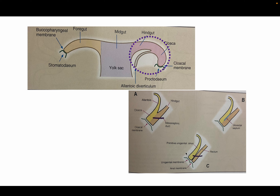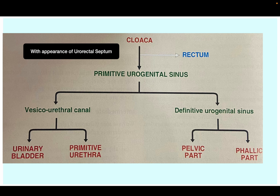With the appearance of the urorectal septum, the cloaca is divided into the primitive urogenital sinus and the rectum. Simultaneously, the cloacal membrane also divides into the urogenital membrane in relation to the primitive urogenital sinus, and the anal membrane in relation to the rectum. This primitive urogenital sinus is important for today's lecture.